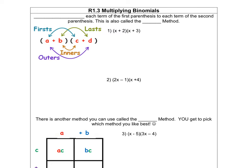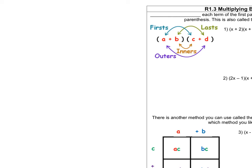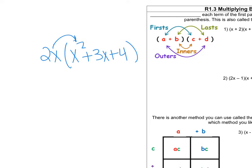Before we start doing multiplying binomials, let's just review real quick multiplying monomials. For example, last week we were doing stuff like 2x times x squared plus 3x plus 4, and then you would just distribute that out. So that would be multiplying a monomial times a polynomial.